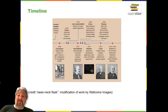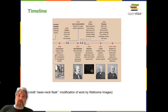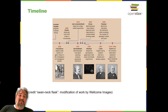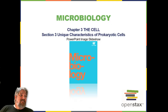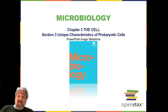Here is a timeline of the discovery of the germ theory of disease, starting with the incorrect miasma theory, through Fracastoro's unproven germ theory, and then through Hooke, Van Leeuwenhoek, Simmelweis, Snow, Pasteur, Lister, and Koch. That ends Section 2. Join me next time for Section 3, Unique Characteristics of Prokaryotic Cells.